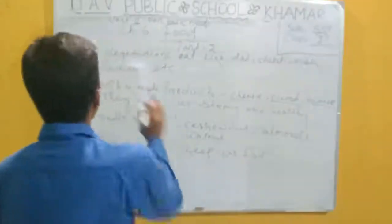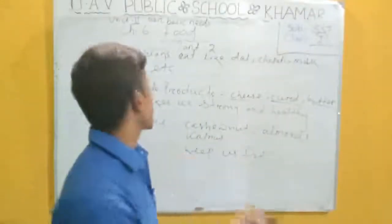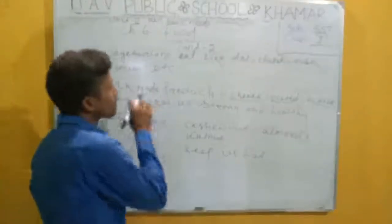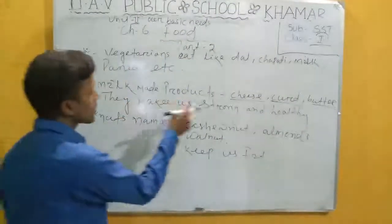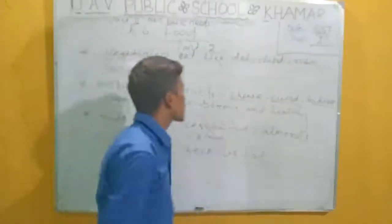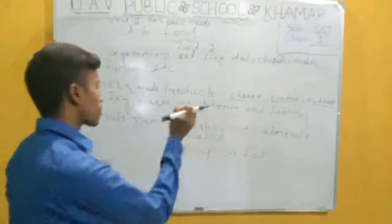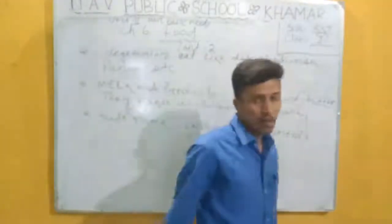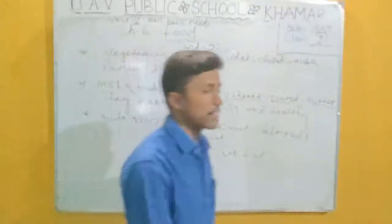We have learned that people who do not eat meat and fish are called vegetarian. Vegetarians eat dal, chapati, milk, paneer, etc. Milk products like cheese and butter keep us strong and healthy. Cashew nut, almond, and walnuts also keep us fit. We have to eat these healthy things so we become stronger and healthier in the future.